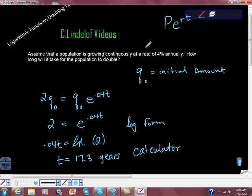Remember that what my clues were here, it says continuously. So I'm going to use my continuous growth model, which is P, which is the initial amount, times e to the rt power, and e is Euler's number.